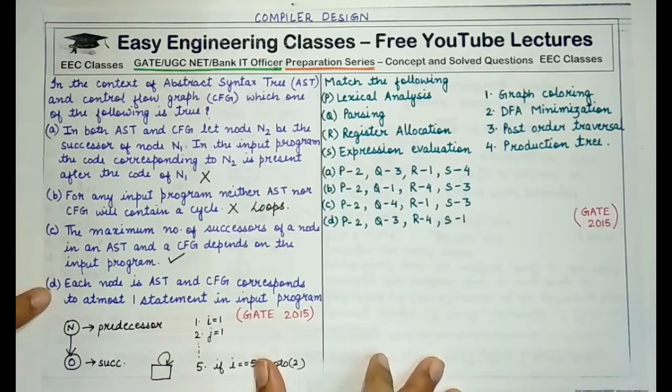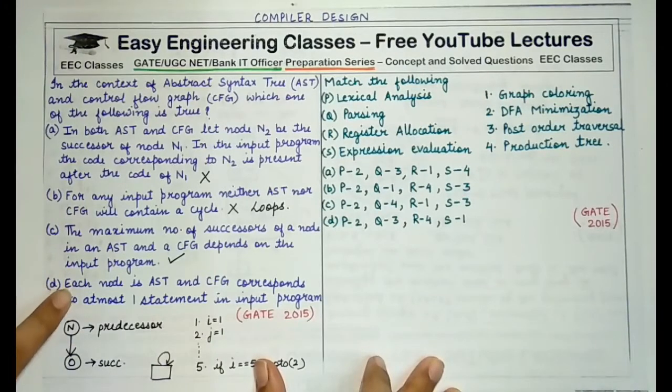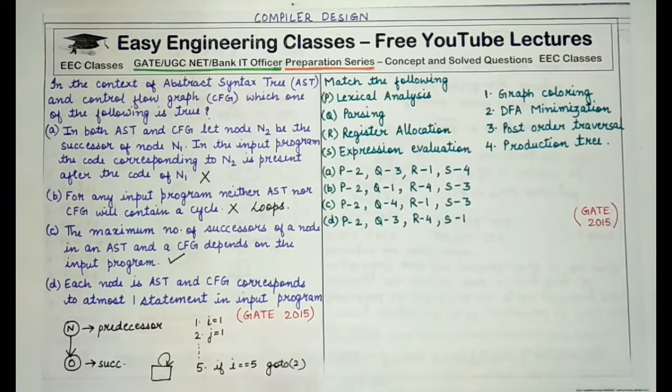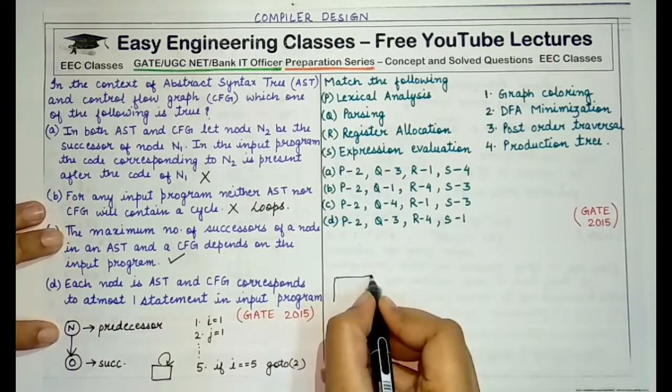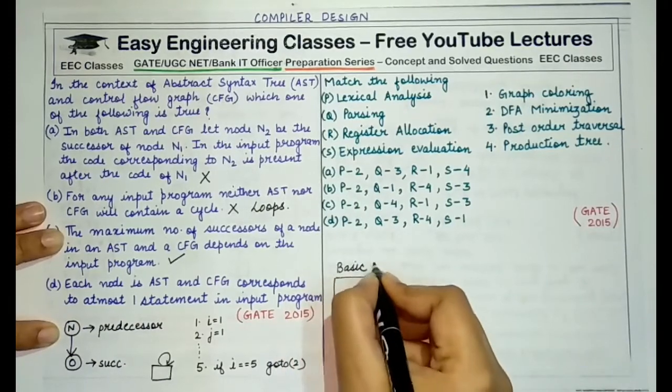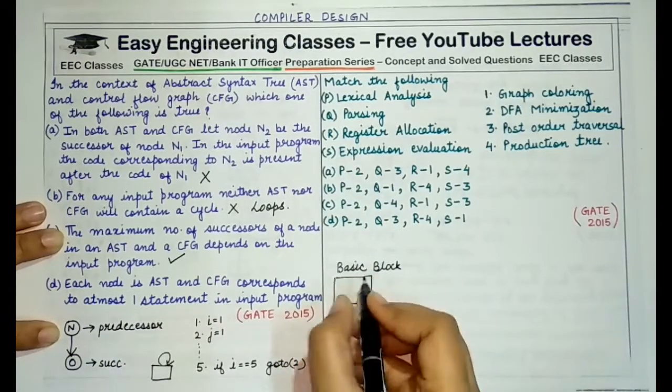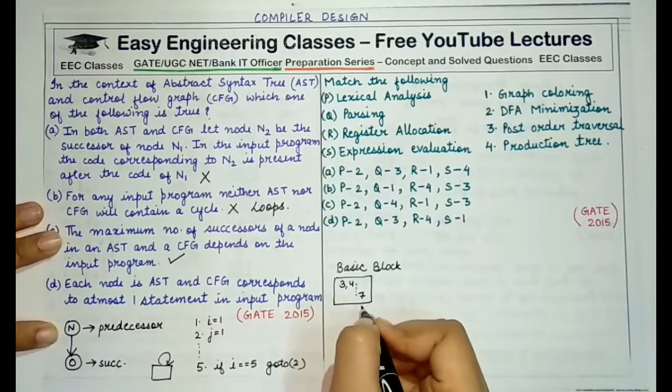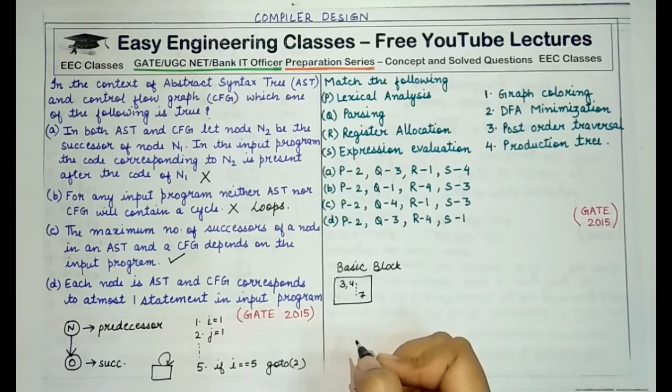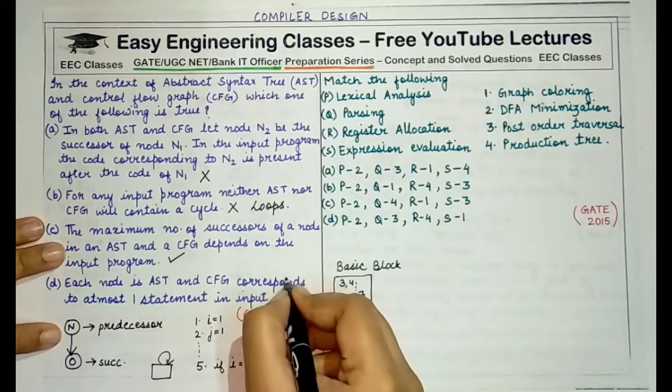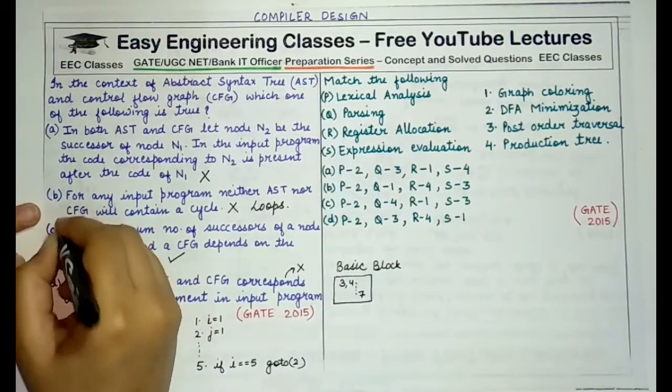Now coming to the last statement, let's check what it says. Each node in abstract syntax tree and CFG corresponds to at most one statement in input program. No, not at all. A single basic block can be a collection or it can be a set of multiple statements that are sequentially executed. So it can be three, four and so on till seven and any number of statements that actually can be grouped together to serve as a single block or a single node. So this is also incorrect. The correct answer is option C here.